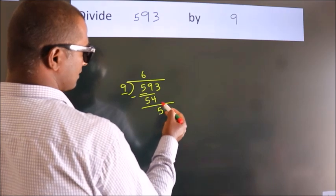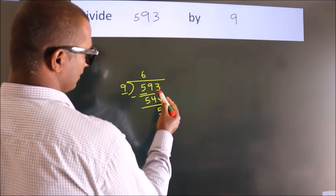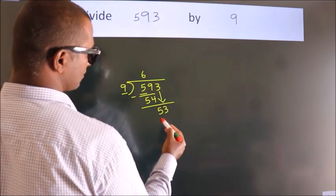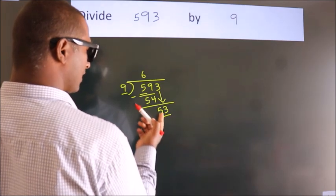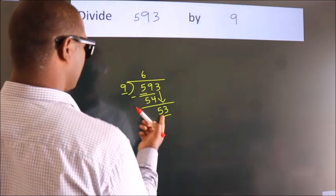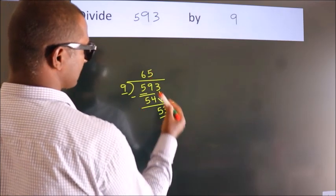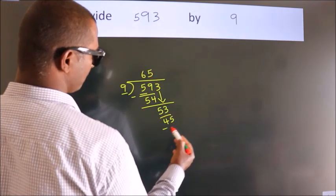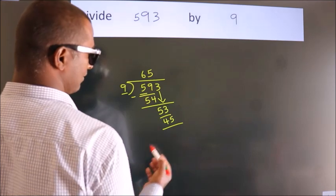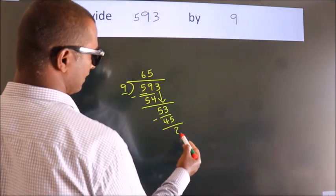After this, bring down the beside number, so 3 down. So 53. A number close to 53 in the 9 table is 9 times 5 equals 45. Now we subtract. We get 8.